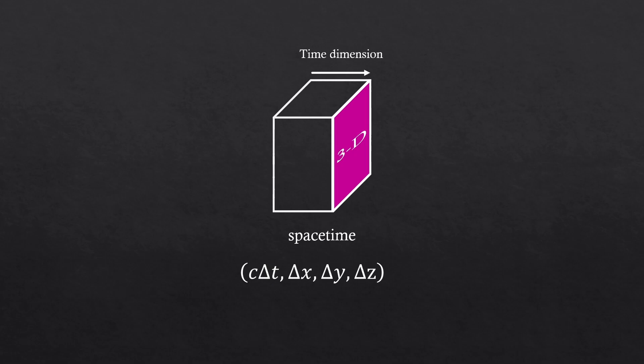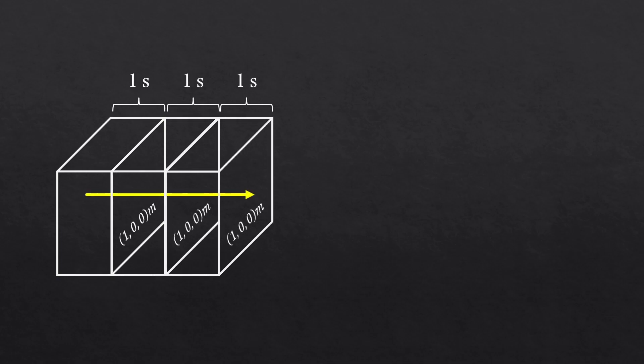Imagine we have space-time unit boxes, and there's a vector traveling in the boxes. Going through each box is equivalent to spending one second of time. With these boxes, this vector is 3 meters per second in the i-hat direction, because the spatial coordinate is 1,0,0.